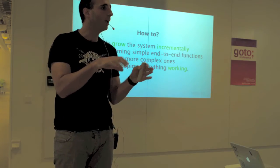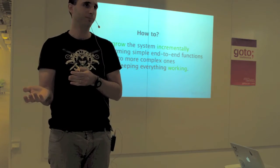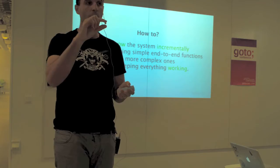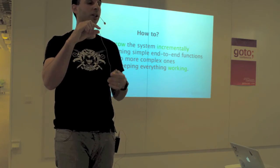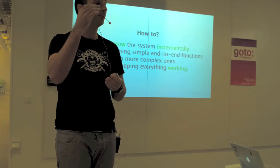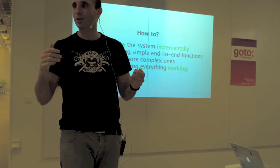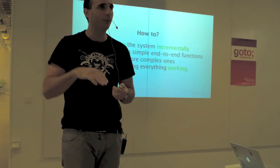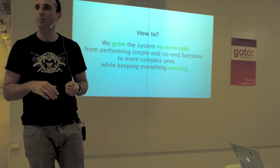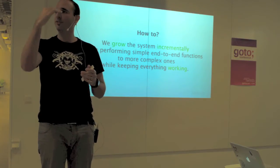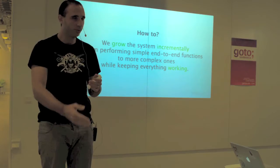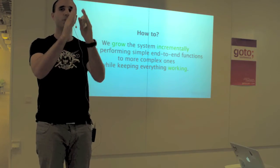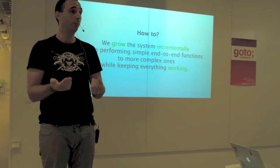Why not go to another metaphor — the metaphor of growing? Do not build your system, grow it. Much like a plant or a flower. A small flower doesn't have many colors or many leaves, but it's still a flower in its entirety. Then it grows and adds more features. But in the process, it's always a flower — you can't have half a flower. So in BDD, we build systems incrementally by adding a feature that goes all the way through the system — a very tiny, thin slice. You keep growing the system like that, while keeping it working all the time.